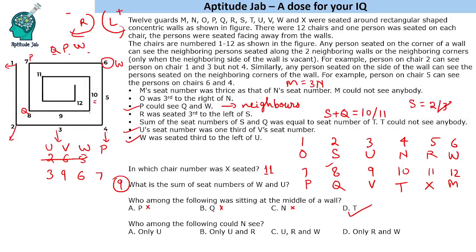Who among the following could N see? N is seated at 4. N could see 3 and 5. 3 is U and 5 is R. He could see only U and R. Notice he cannot see W because this person will create hindrance. They could see the corner person only if the wall is vacant. This person will create hindrance, so he could see only 2 people from him.